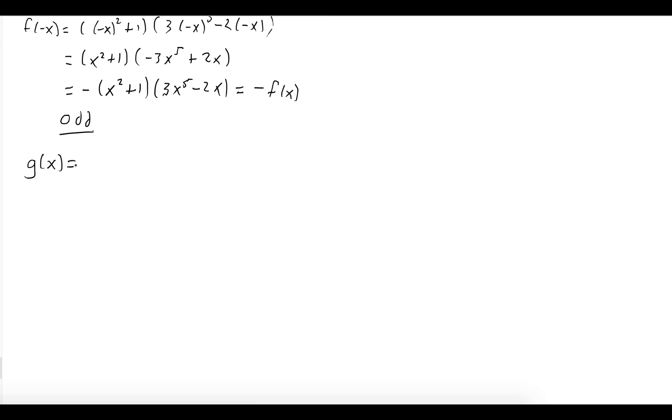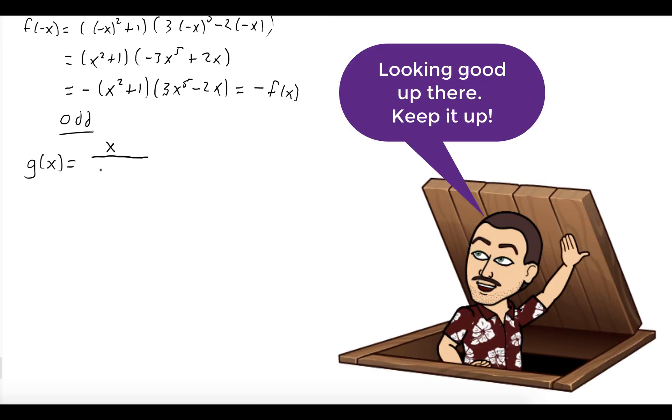Okay, now we'll do the same thing with g. Evaluating g(-x), we get -x/(-x³ + 6(-x)⁷).